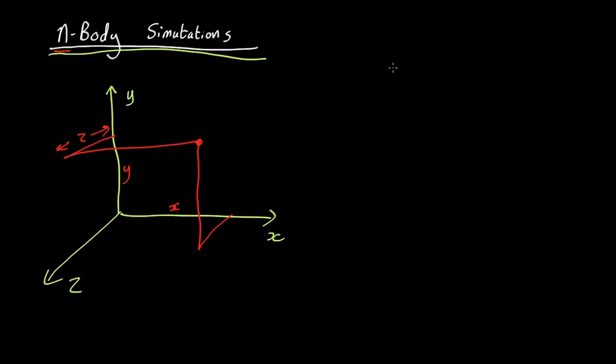So in your computer, you have object 1, 2, 3, and you have position x, y, and z. And you'll give each particle numbers for those. Then you'll also need its velocity. To begin with, the velocity is going to be quite small. And the velocity will also have x, y, and z components.